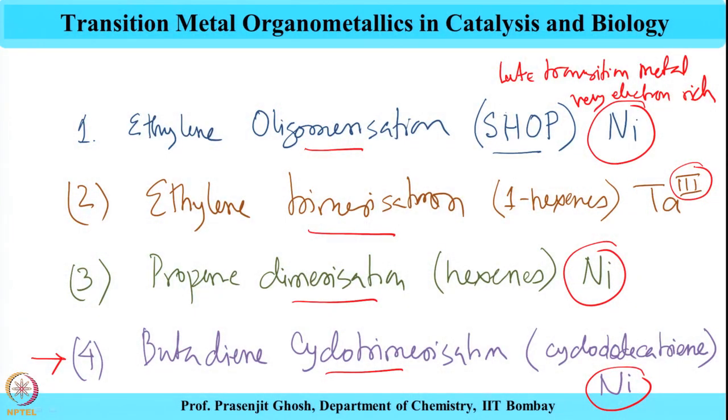From this perspective, ethylene trimerization with tantalum(III) — which is an early transition metal — stands out, since there are some examples of lower-degree oligomerization like trimerization happening with an electron-deficient metal like tantalum. However, it is important to note that the oxidation state of tantalum here is +3, not +5, so it is not as electron-deficient as it would be in the +5 oxidation state.